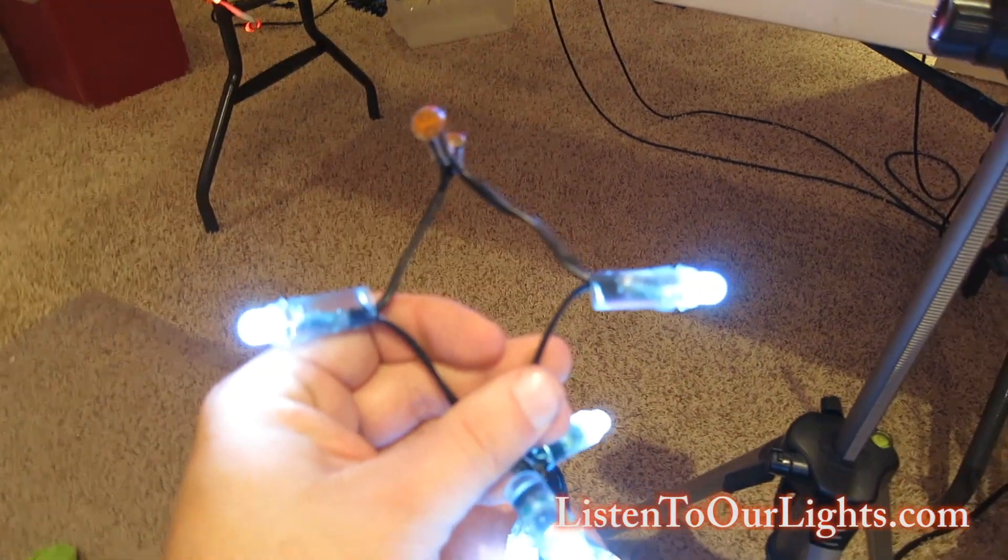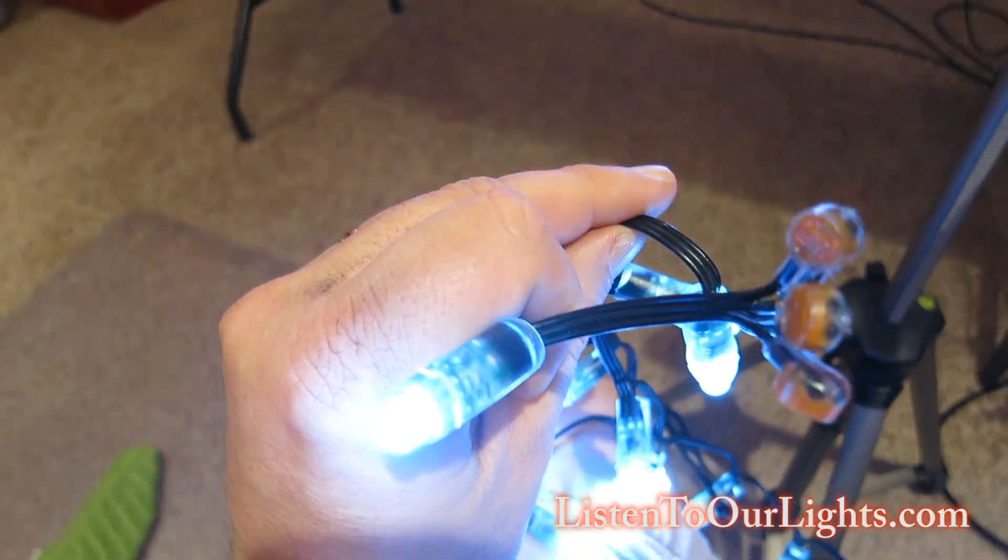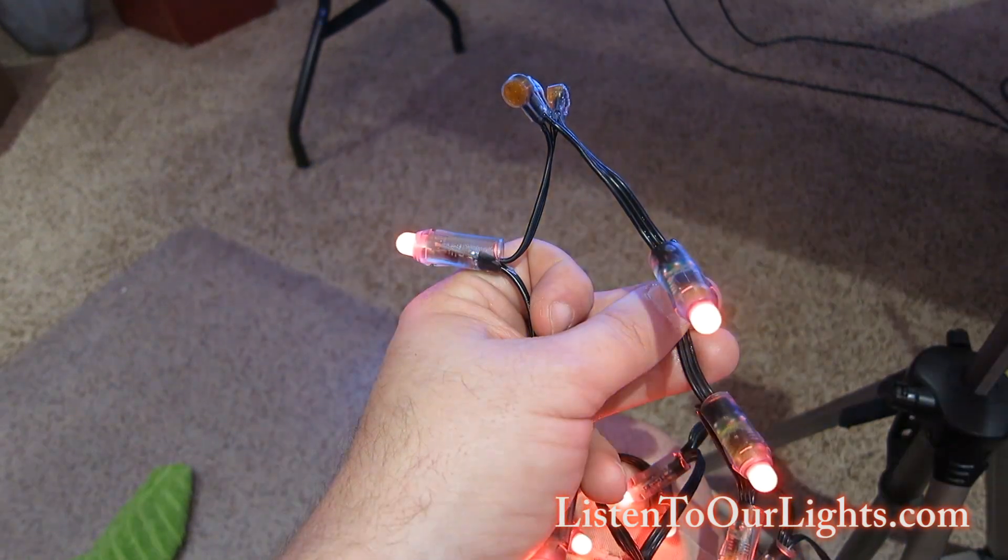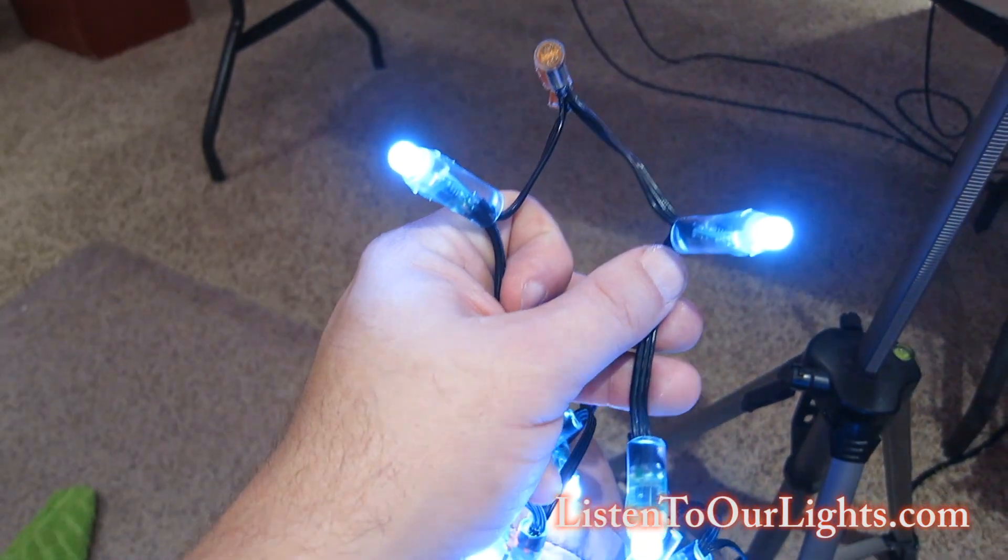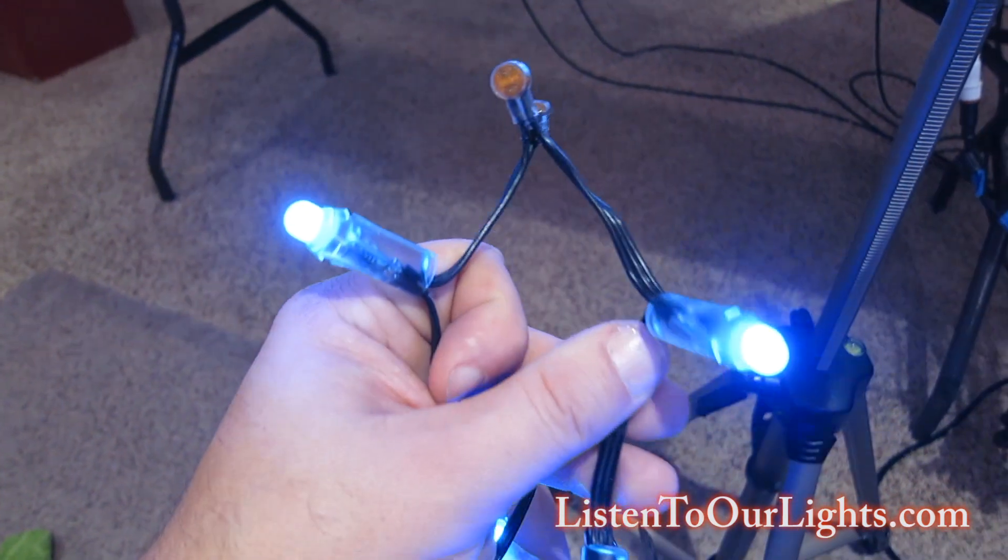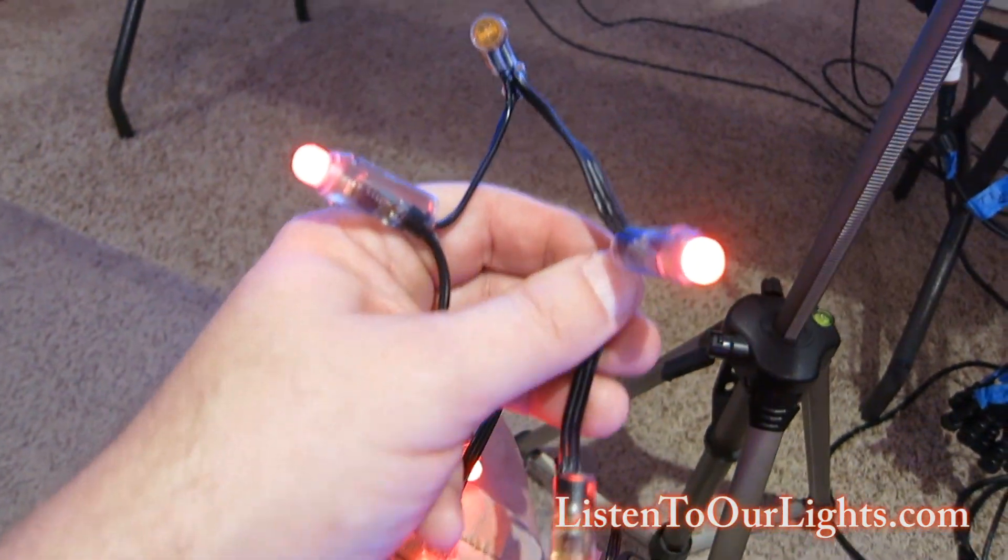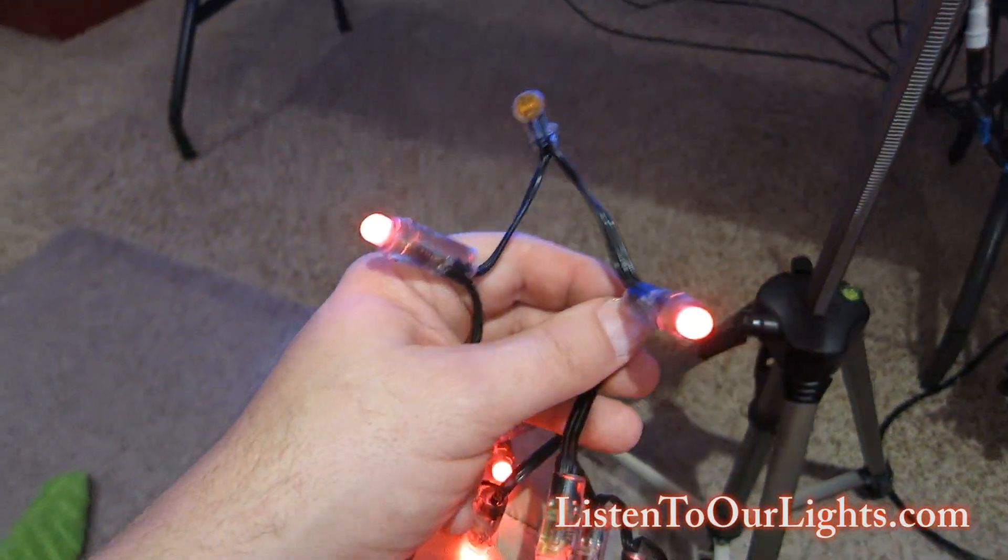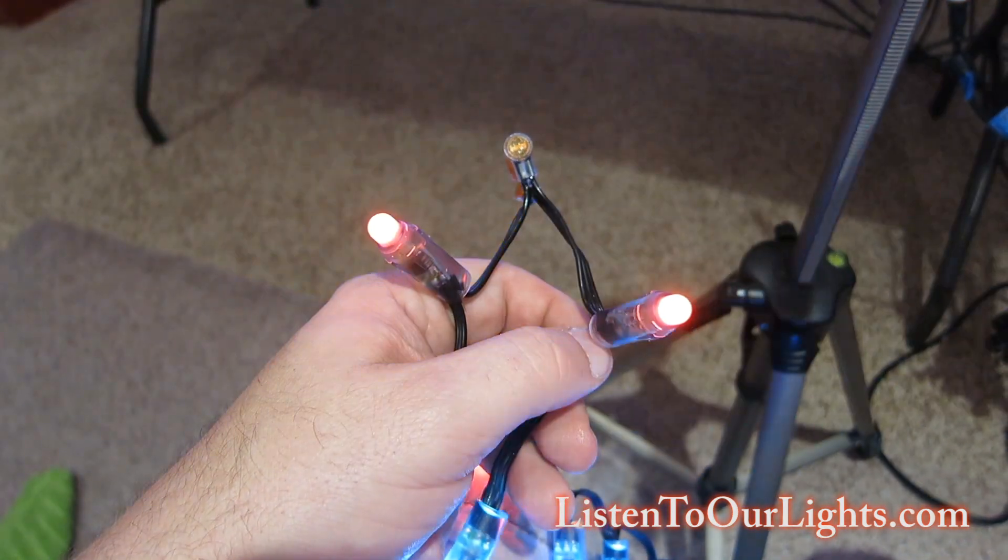So there it is, we have popped out that bad pixel. And you know the only thing I need to do, and I'll mark this string, is that this is now a 49 bulb string instead of 50. Now if you had a bad string that you had been dealing with before and you have some extra bulbs, you could always drop one in there. I'm about easy, so I just do it the easy way. I just cut it out and then when I use this string in the future, I'll just remember it's a string of 49 not 50.